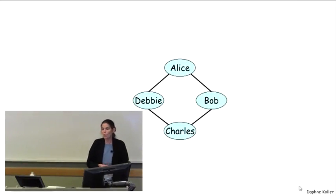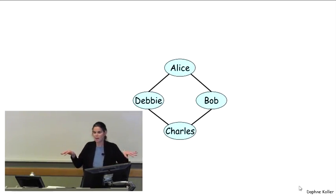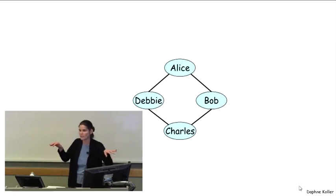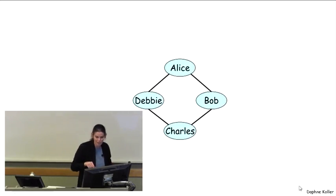So let's look again at a toy example just to illustrate what's going on. This is an example of four people who are studying together in study pairs. Notice that Alice and Charles don't get along, and Bob and Debbie had a bad breakup, so they don't talk to each other either. And so really, we only have the study pairs that are marked by the edges on this diagram.